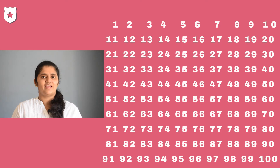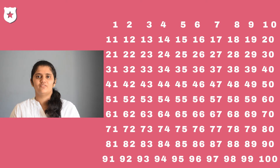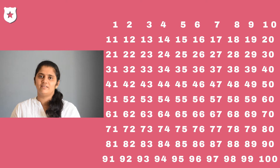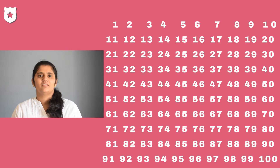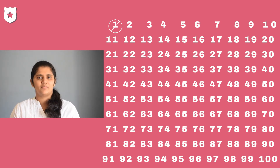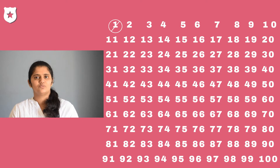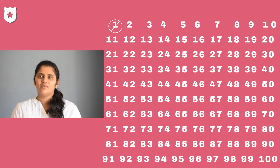Let us do an activity now. Here we are going to identify the prime numbers below 100. Prepare a table of numbers from 1 to 100. We know 1 is neither prime nor composite. Let's take 2 — we know 2 is the first prime number. We know all the multiples of 2 are even numbers.